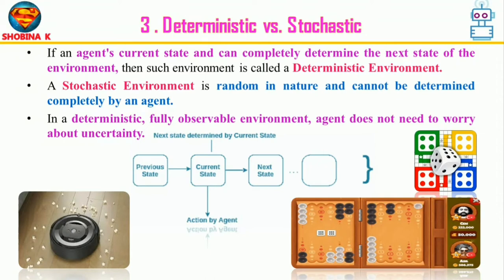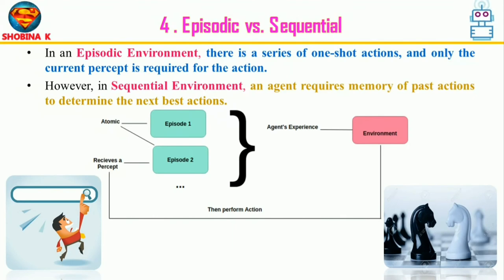Most real-world AI environments are non-deterministic and classified as stochastic. Non-deterministic environments characterize actions by possible outcomes but attach no probabilities. Stochastic environments quantify uncertainty in terms of probabilities. In an episodic environment, the agent's experience is divided into atomic episodes — in each episode the agent receives a percept and performs a single action, and the next episode does not depend on previous ones. Many classification tasks are episodic. In sequential environments, an agent uses past experiences to determine the next best action, and the current decision could affect all future decisions. Episodic environments are simpler because the agent does not need to think ahead.